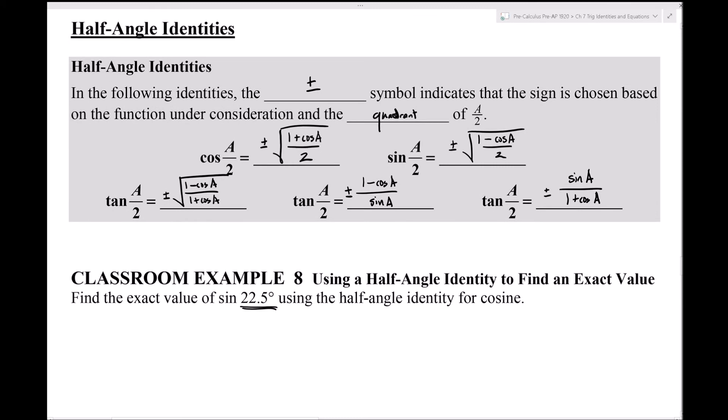Those are the three forms for tan(a/2). One has a square root with (1 − cos) on top and (1 + cos) on the bottom. The second has no square root: (1 − cos a)/sin a. The third has no square root: sin a/(1 + cos a). These are the last five identities out of all the ones we've covered.